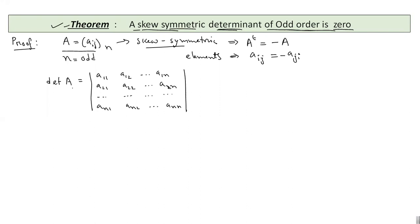Now, see that here our A is skew symmetric. So, we can replace each aij here by minus aji. So, write every element, that is every aij, as minus aji.